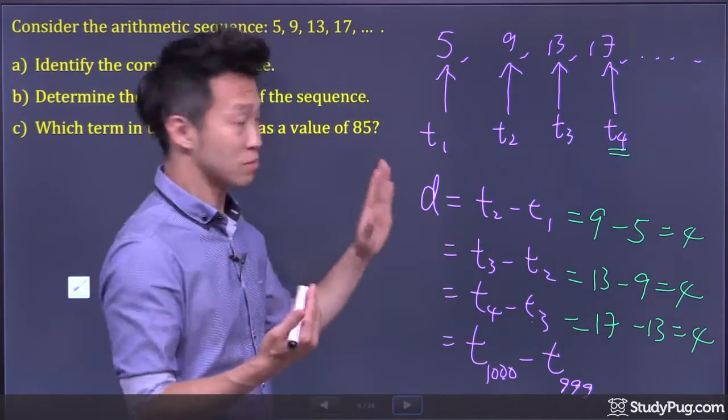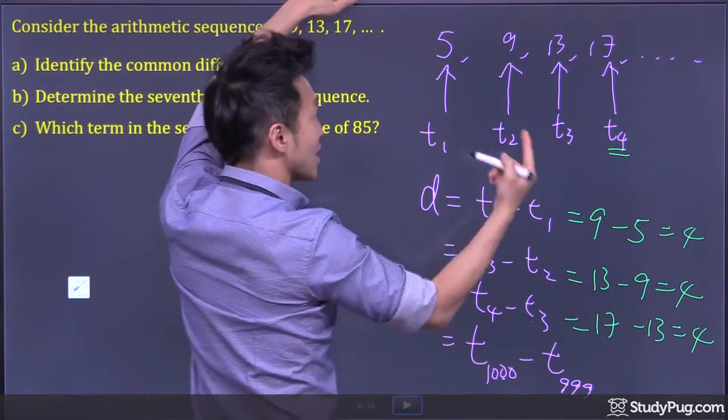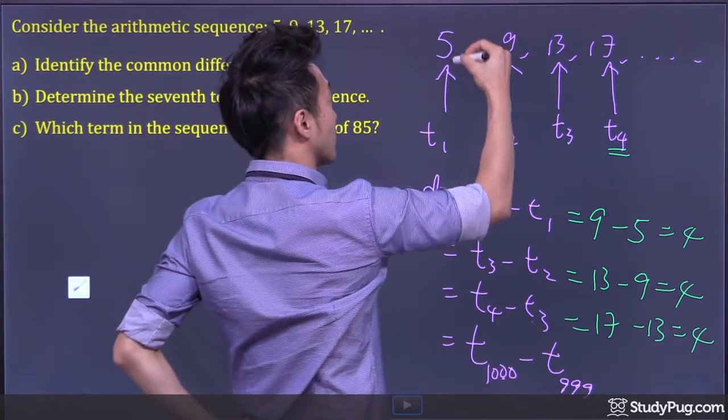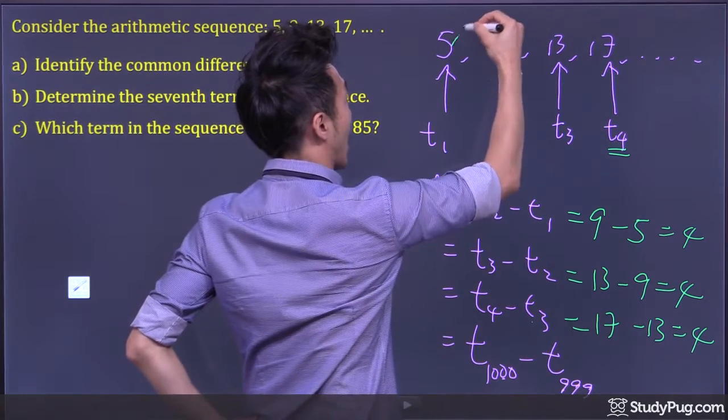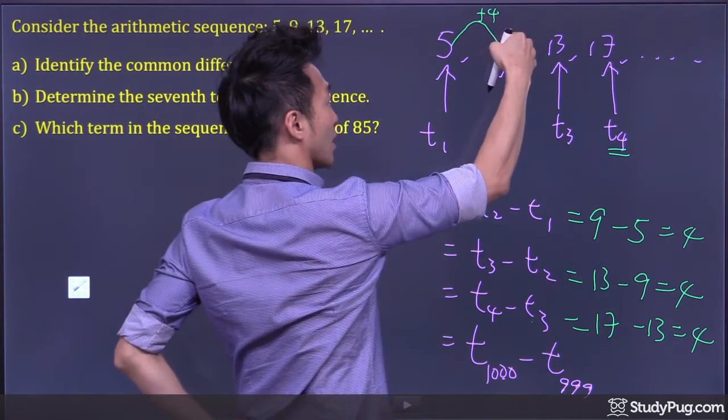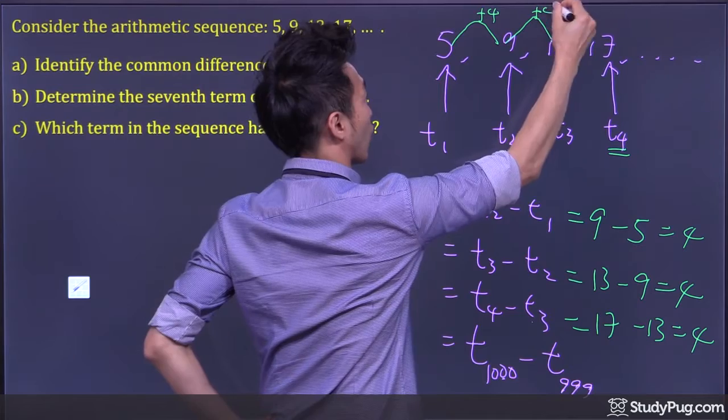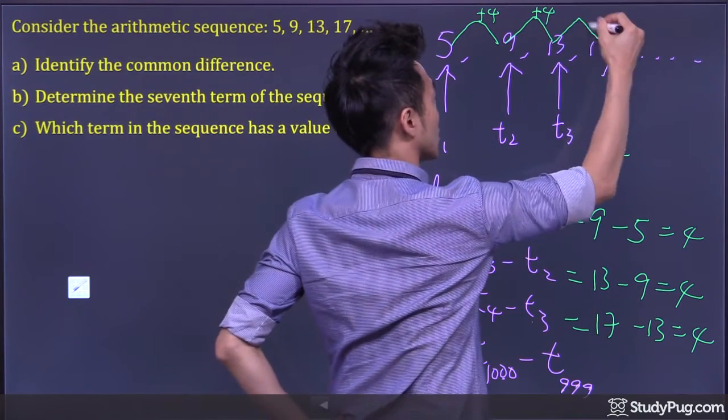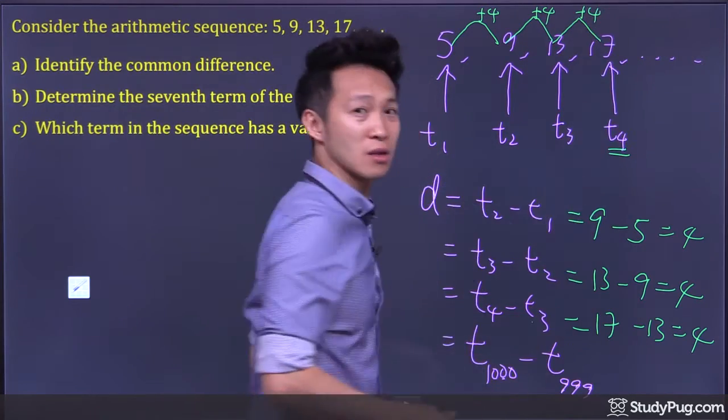And we can see that. Because look: 5, if we add 4, we get 9. 9 add 4, we get 13. 13 add 4, we get 17.